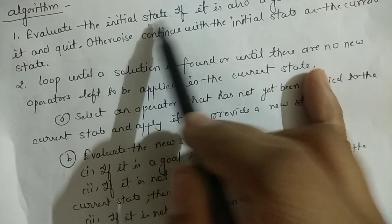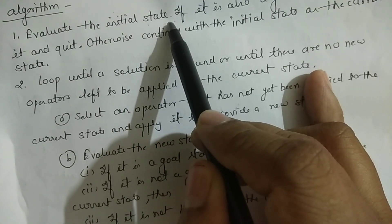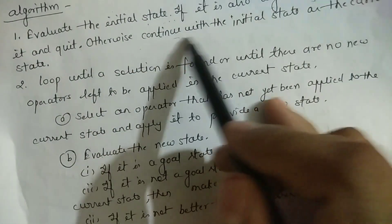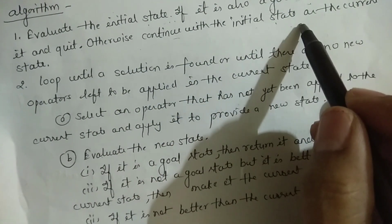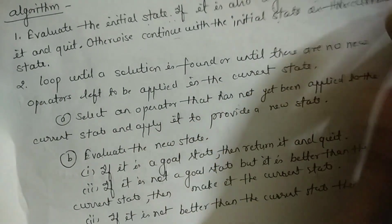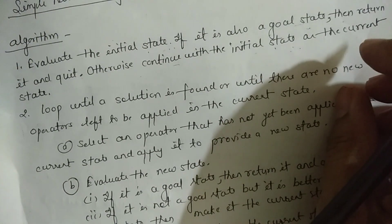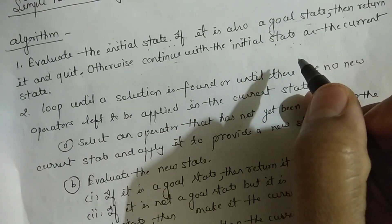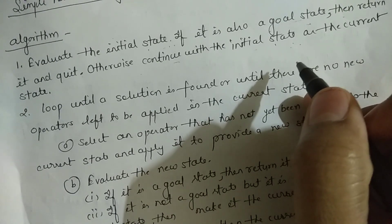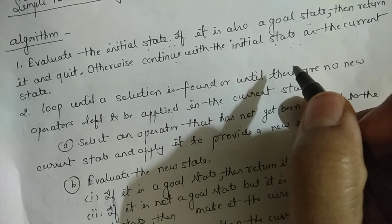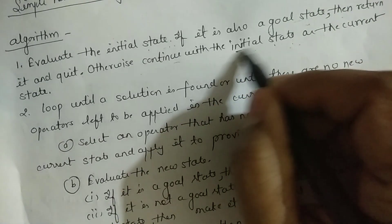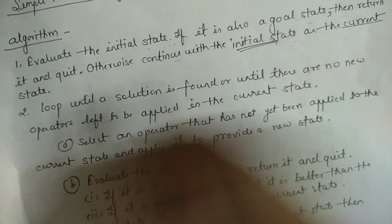The first step is to evaluate the initial state. If it is a goal state, then we return and quit. Otherwise, we use the initial state as the current state. We start from the initial state and set it as the current state.